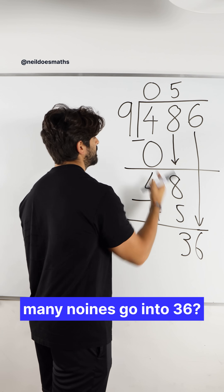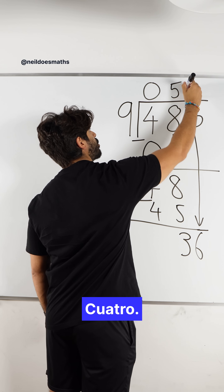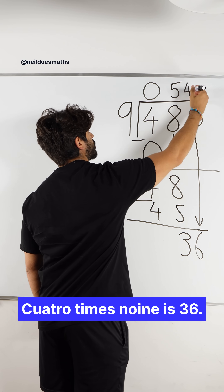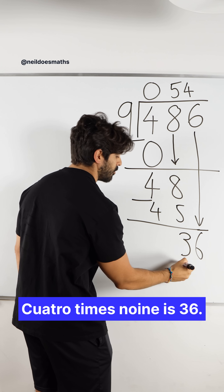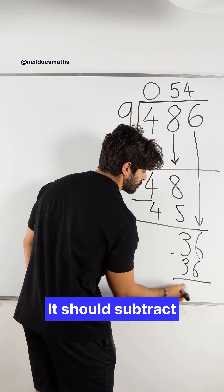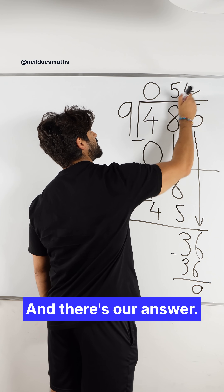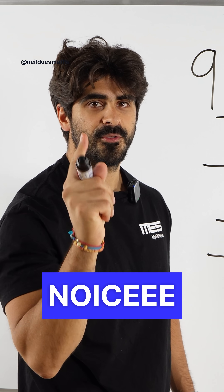And then we say how many nines go into 36? Quatro. Quatro times nine is 36. It should subtract to give you zero. And there's our answer — fifty-four.